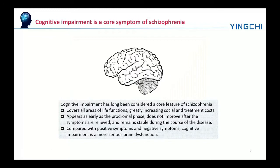Cognitive impairment is also a core symptom of schizophrenia and appears as early as the prodromal phase, does not improve after symptoms are relieved, and remains stable during the course of disease. Compared with positive symptoms and negative symptoms, cognitive impairment is a more serious brain dysfunction.